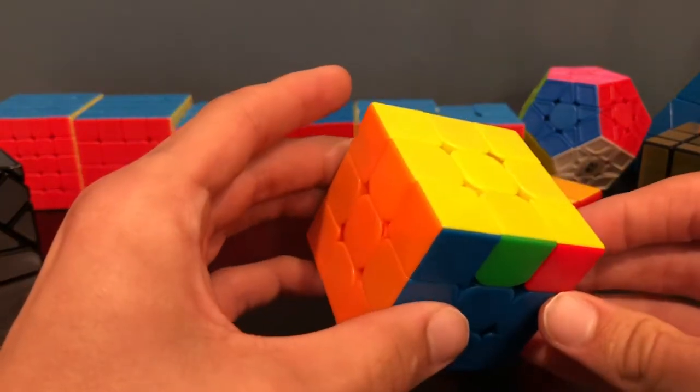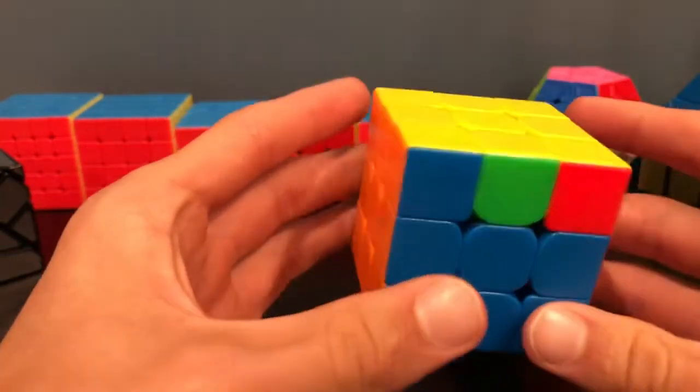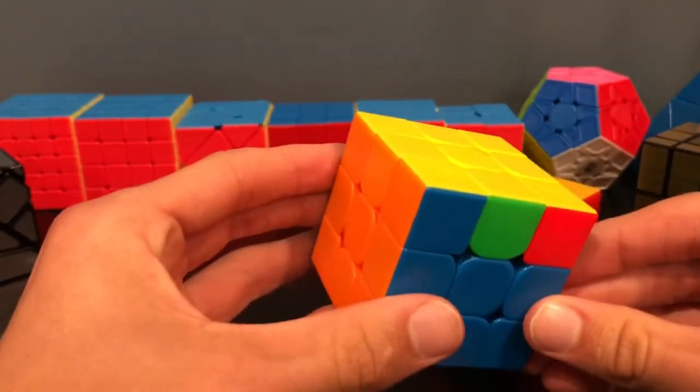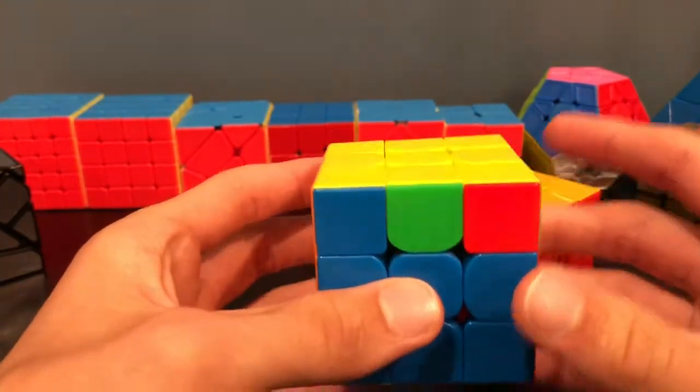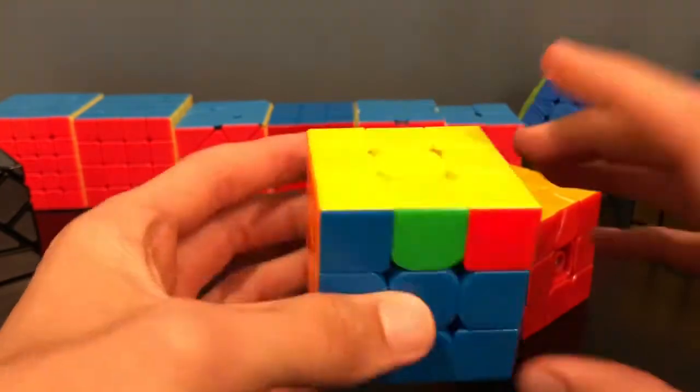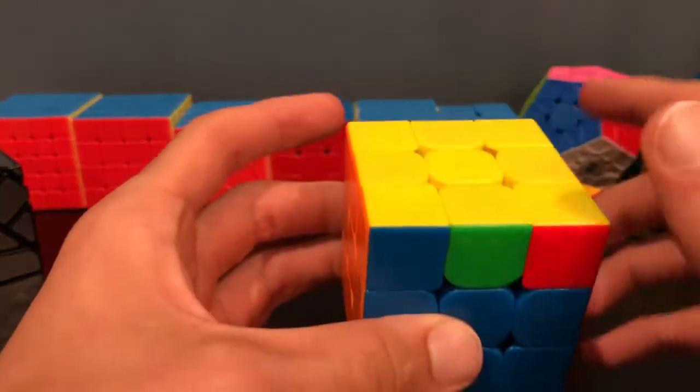Now also before I show the algorithm, it's very easy if you already know T-perm. So essentially it's a few setup moves, then the exact T-perm algorithm, then a few ending moves.